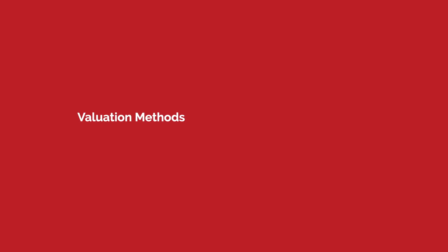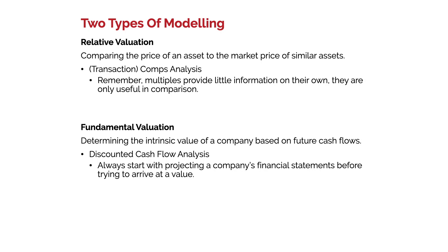There are two types of modeling we can do. We can do relative valuation, where we compare the price of an asset to the market price of similar assets — this is comps analysis. We use multiples, and these multiples provide very little information on their own; they're only useful in comparison. A good way to think about comps analysis is like pricing a home. If you want to sell your home, you look at recent sales in your neighborhood. Maybe you have a two-bed, two-bath, 2,200 square foot home and a nearby house — 2,100 square feet, two-bed, 2.5-bath — sold for $500,000. So you might set yours around $450,000–$500,000. That's comps analysis: defining your valuation relative to a peer set.